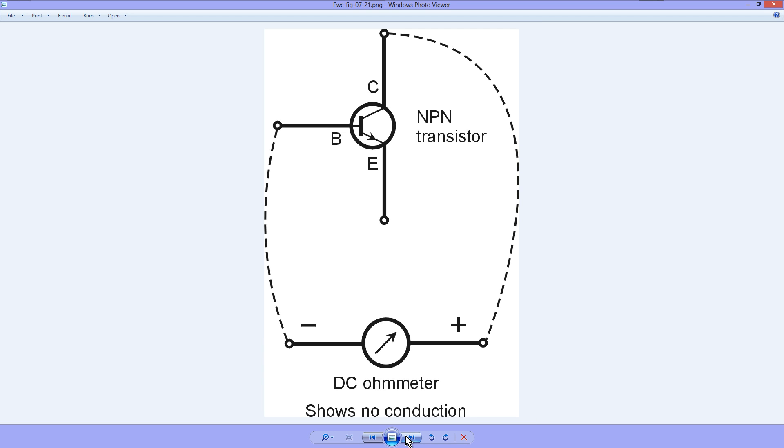Test number four: just swap the leads and you should see no conduction, infinity ohms. Electrons cannot easily flow through this PN junction with the arrow like that. In fact, they can't at all.